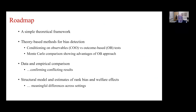The roadmap: first we'll give a simple theoretical framework, which will give us theory-based ways to think about bias detection methods. We'll discuss two approaches: conditioning on observables versus outcome-based approaches, and show with Monte Carlo evidence the advantages of the outcome-based approach. It's not that one is good and one is bad — it really depends on what data you have. Then we'll go to empirical data from Amazon, Spotify, and Expedia, and finally implement the framework directly, estimating structural models that give rise to rank bias estimates and welfare effects.